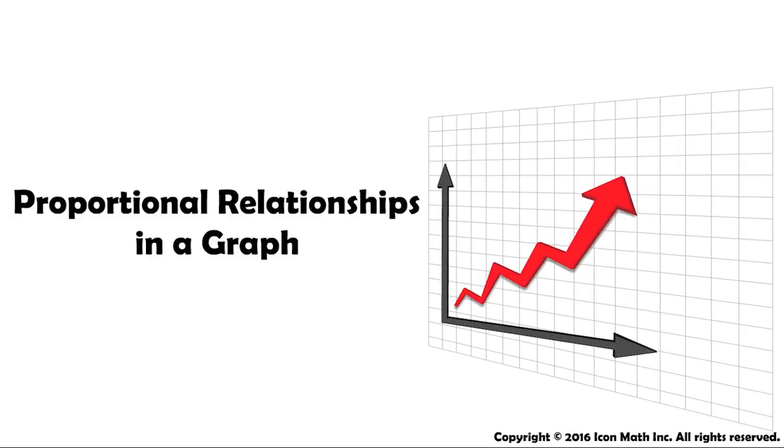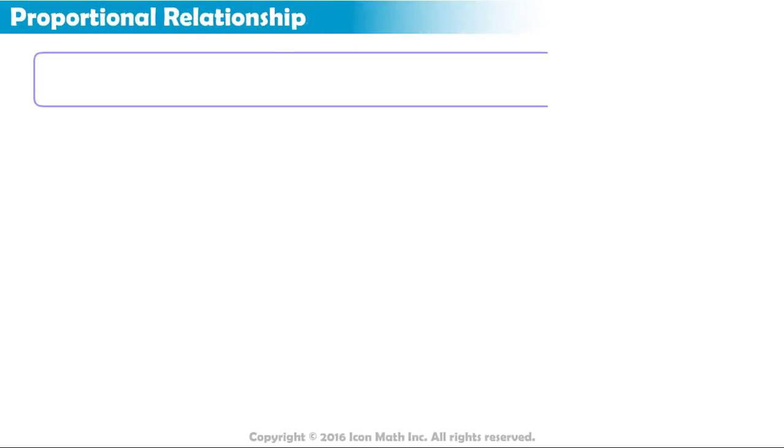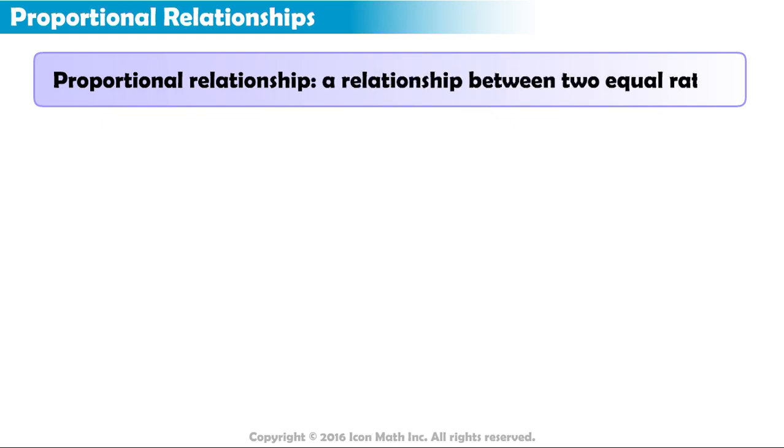Proportional Relationships in a Graph. A proportional relationship is a relationship between two equal ratios.